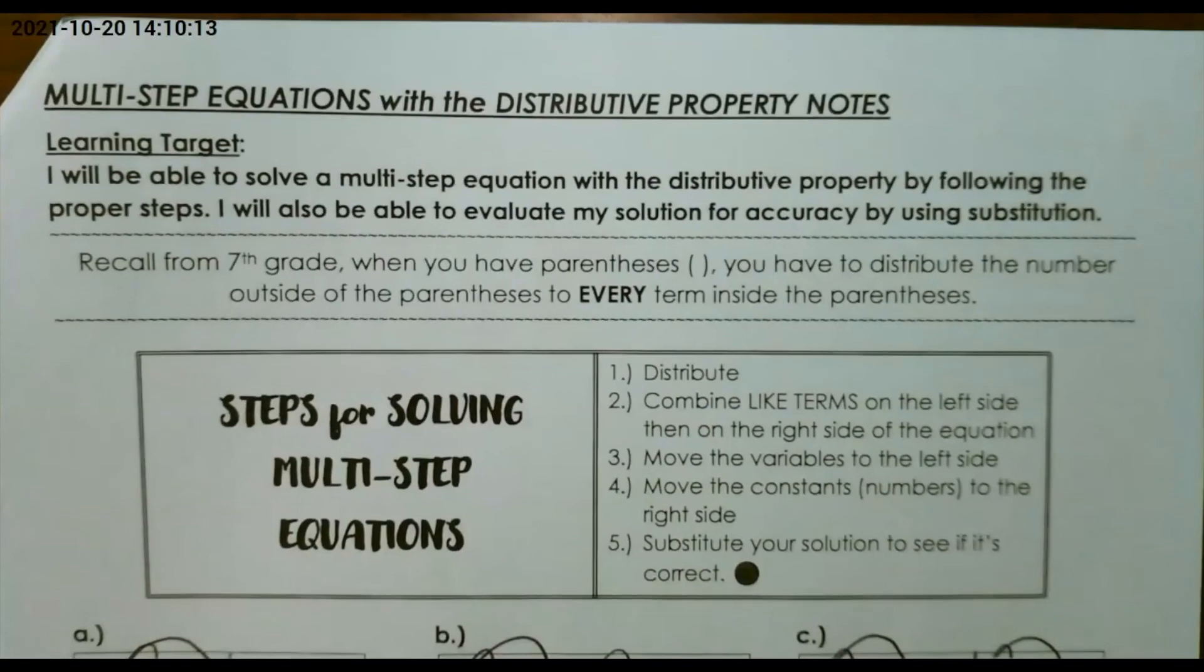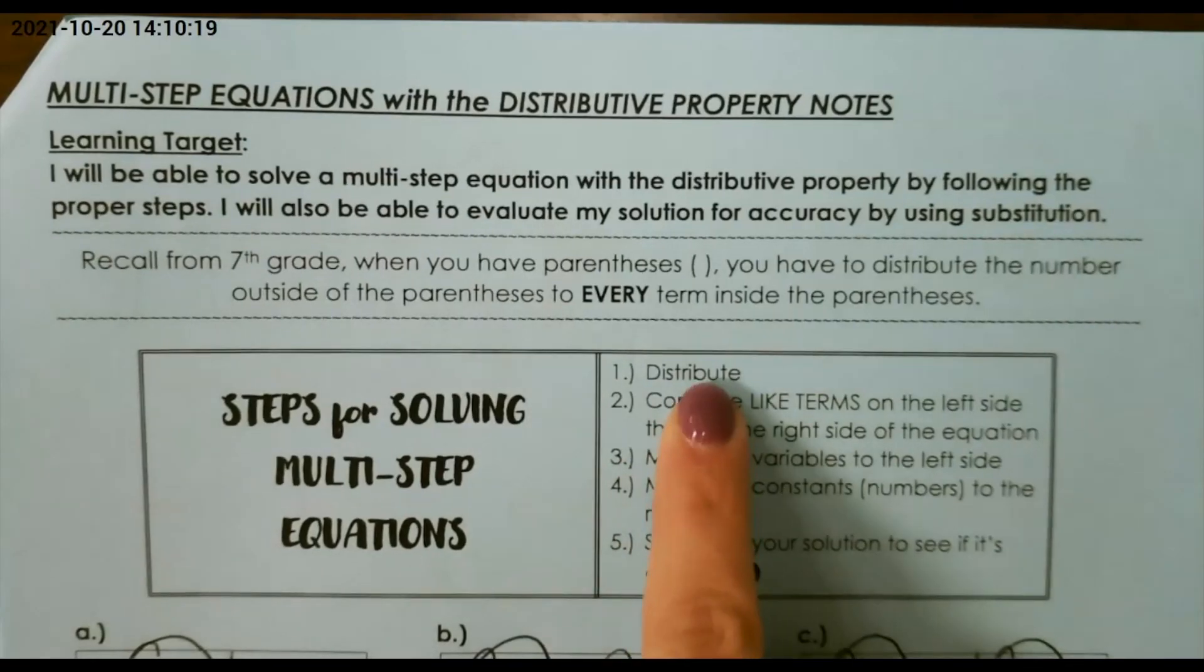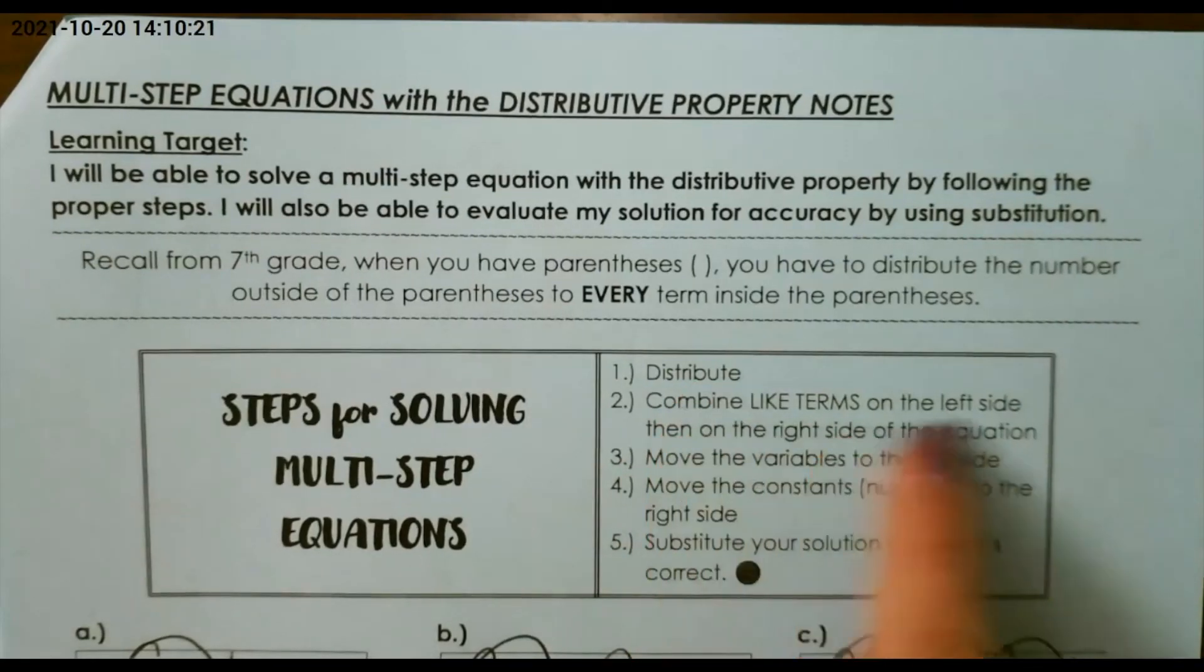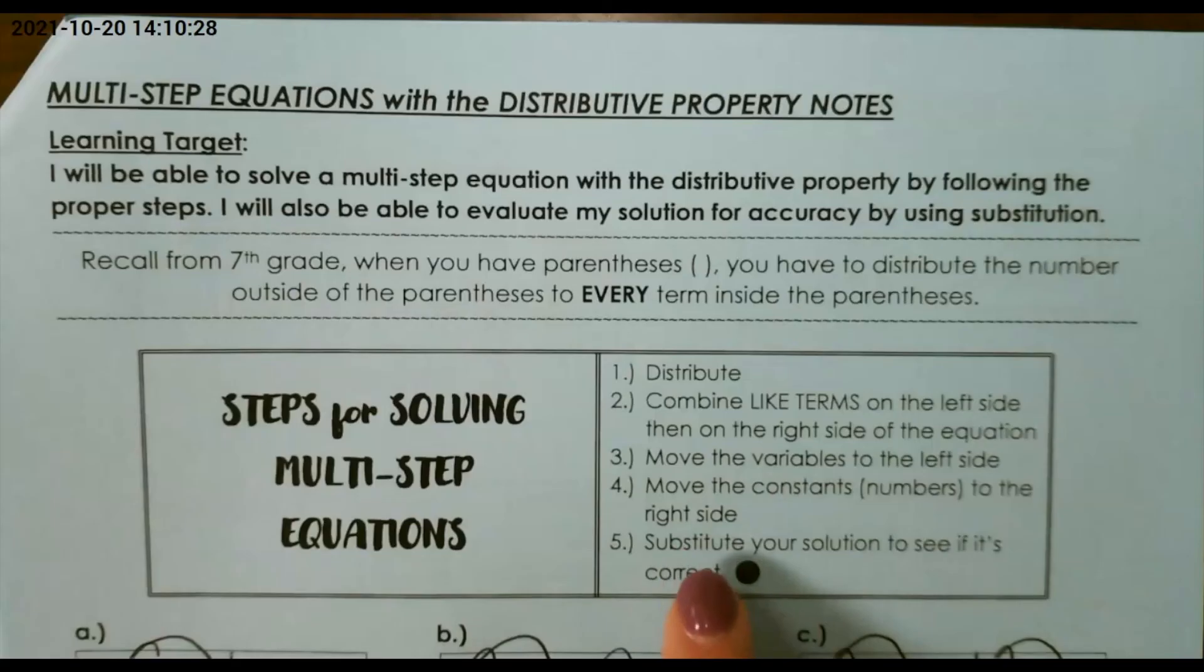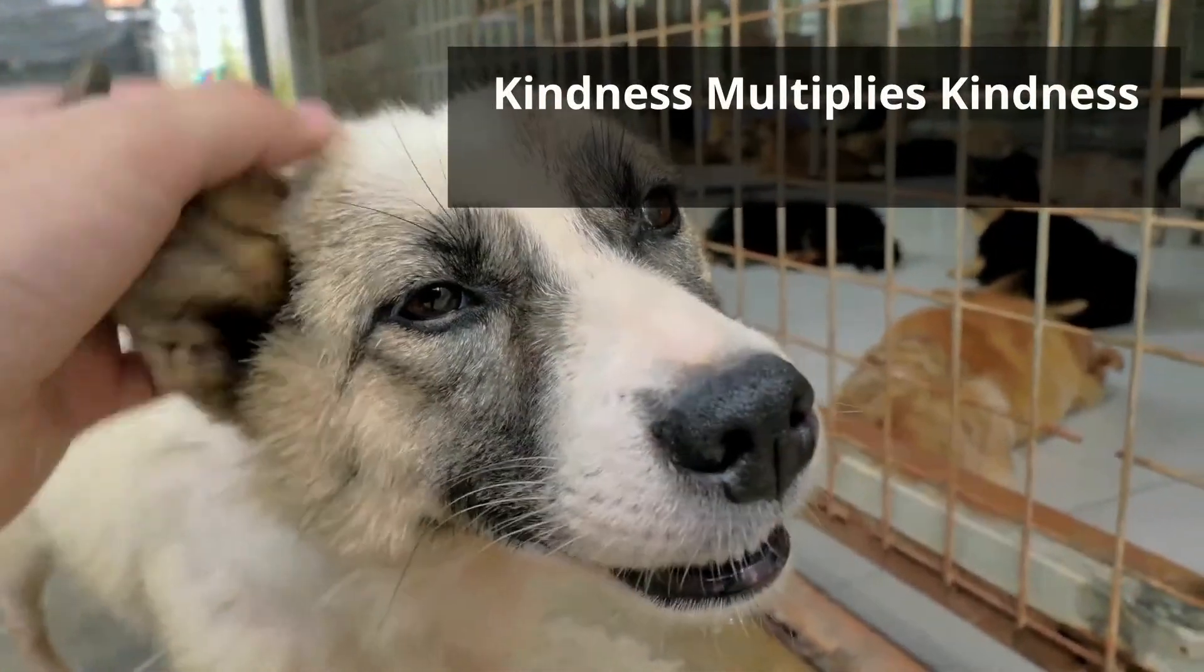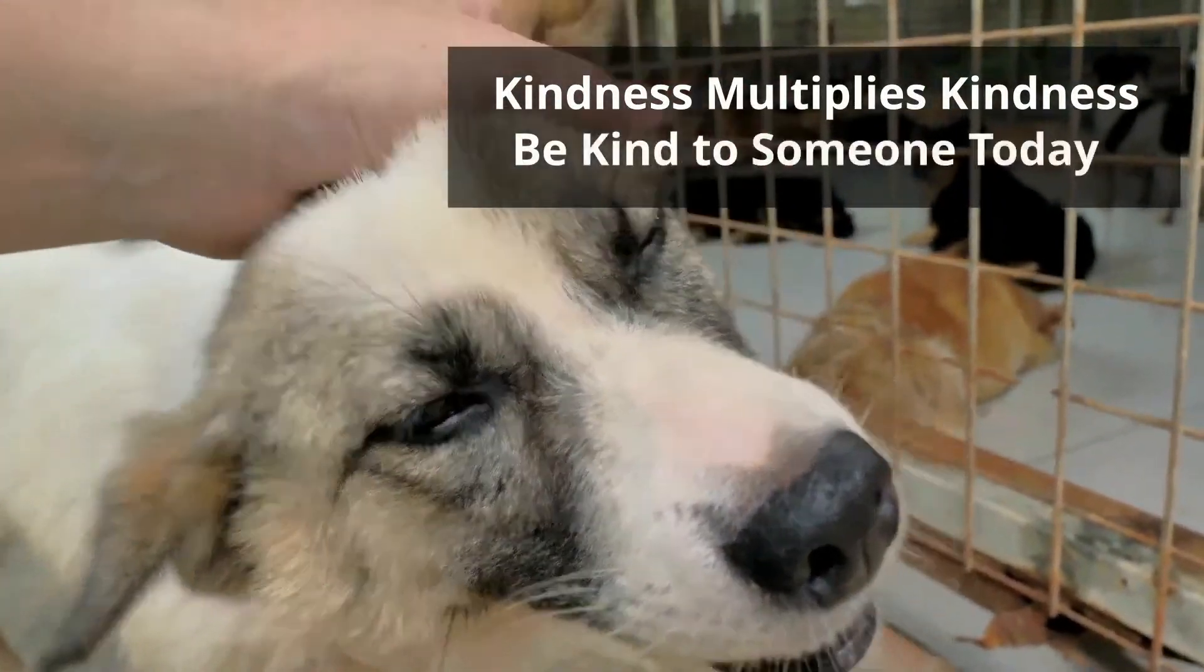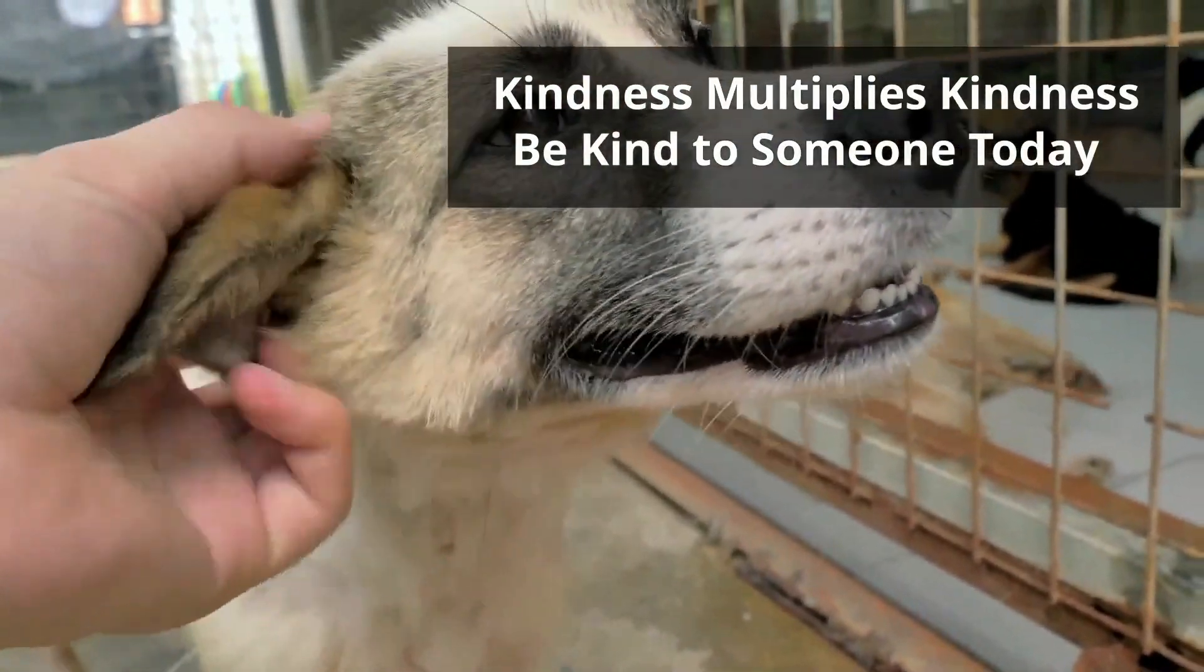So, as a review, you follow these steps when solving multi-step equations with distributive property. Distribute, combine like terms on the left side and the right side, move the variables to the left side, and move the constants to the right side, and you can always substitute your solution at the end to check if you're correct. All right. Thank you.